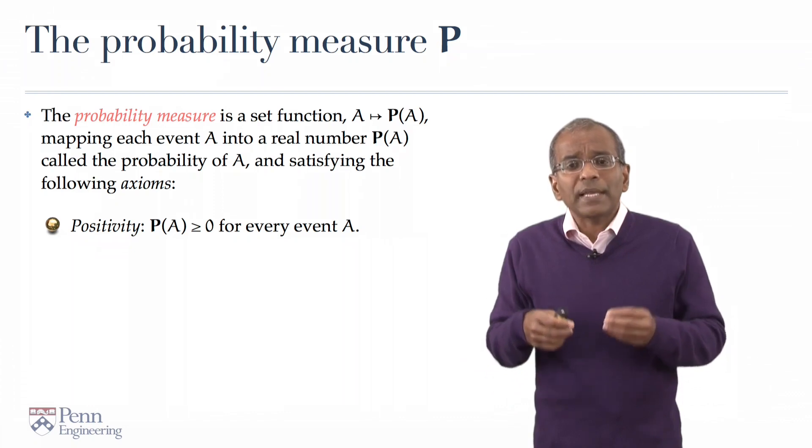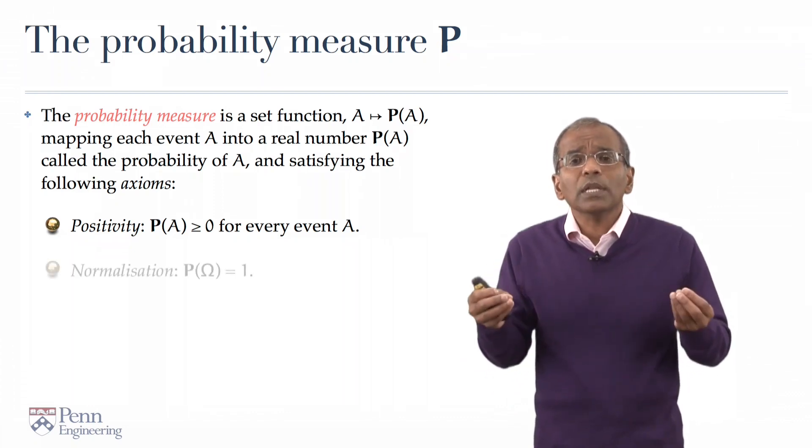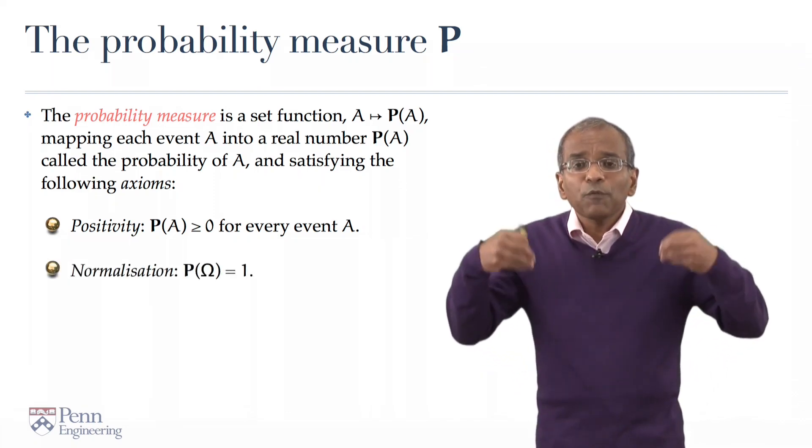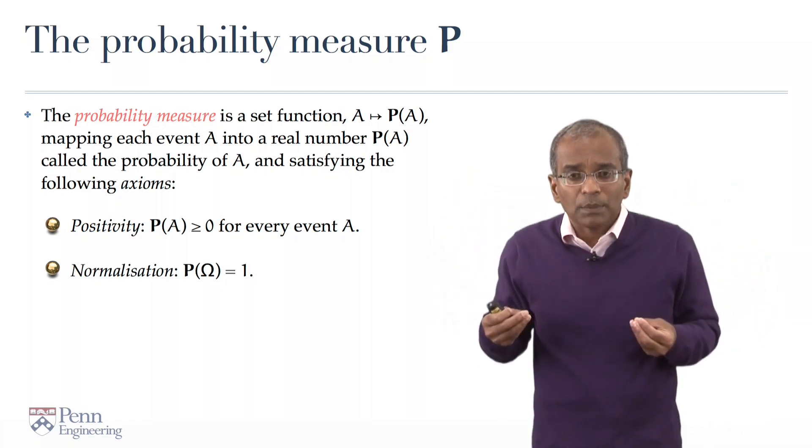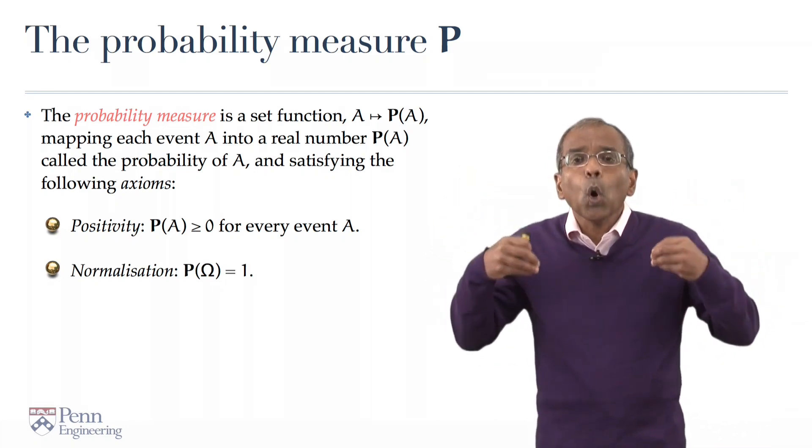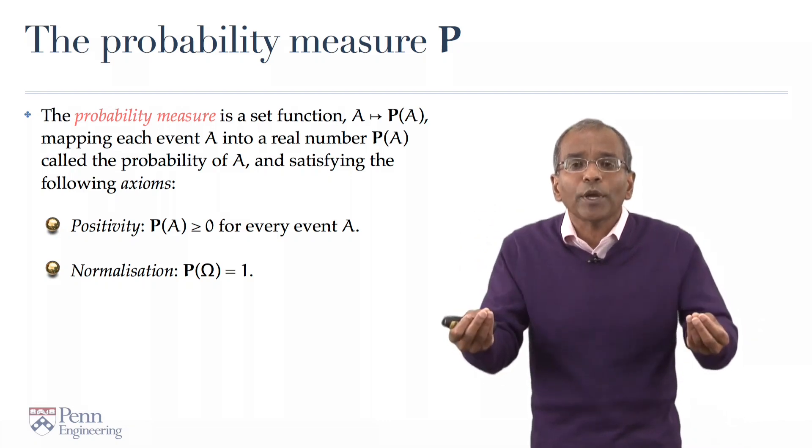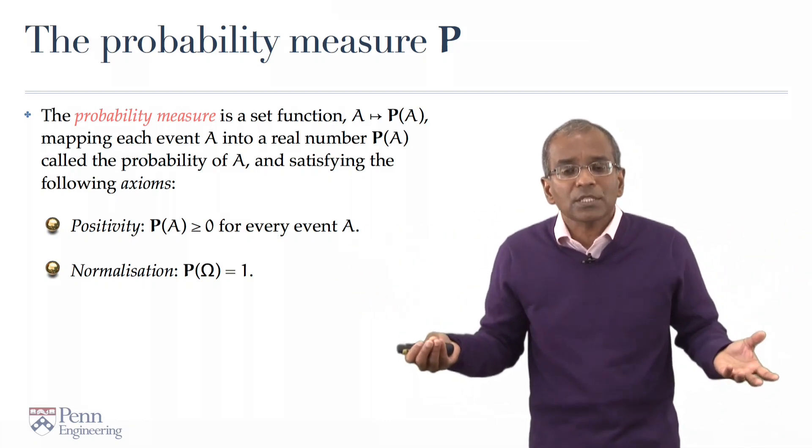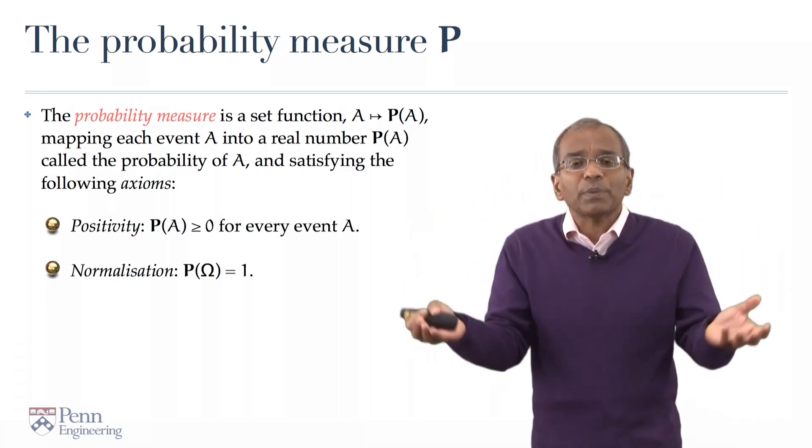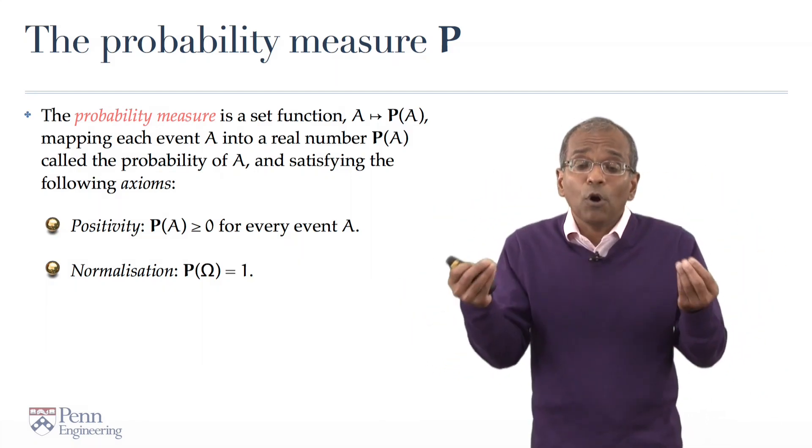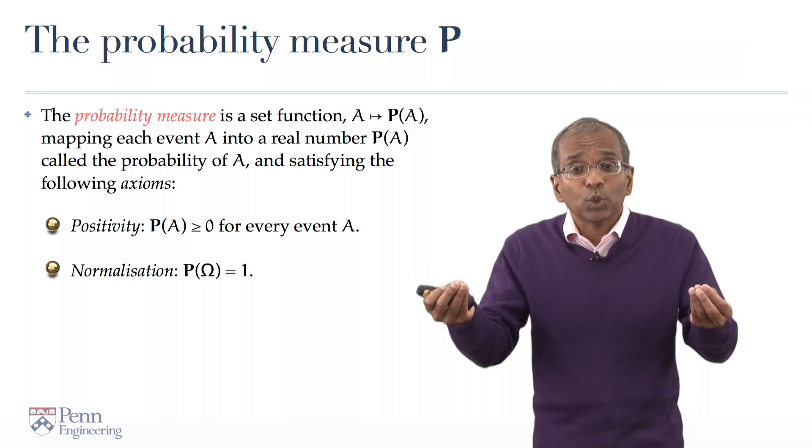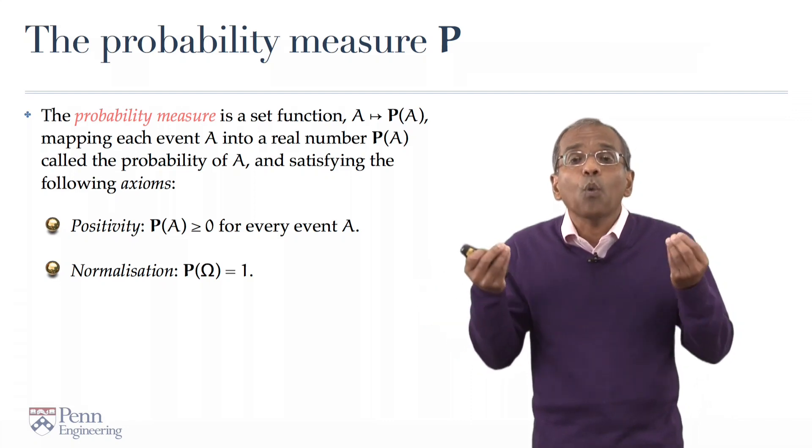The second of the basic axioms is that of normalization. The performance of our Gedanken experiment, our thought experiment, always results in an outcome, in a sample point from the sample space. And therefore, the entire sample space is a certain event, and therefore, it is natural to ascribe to it the probability of 1.